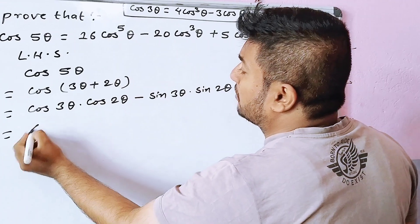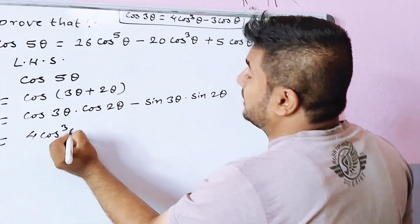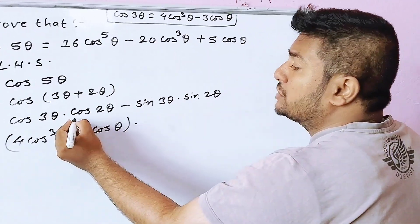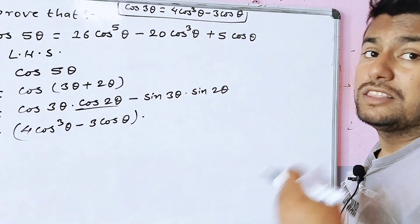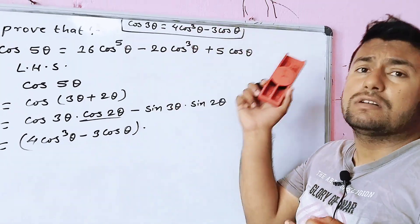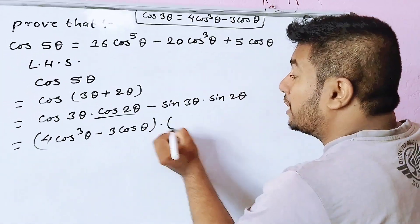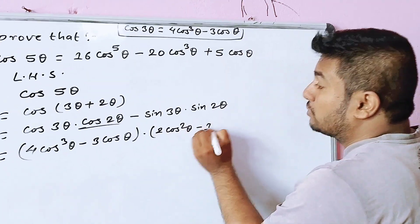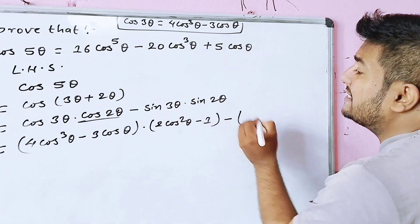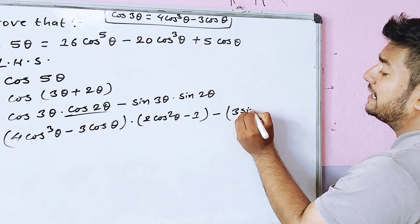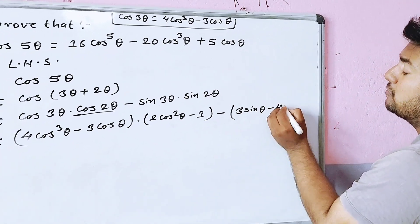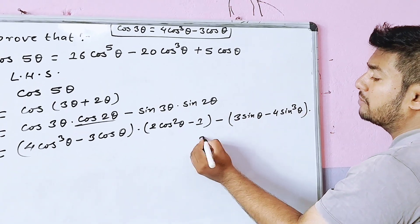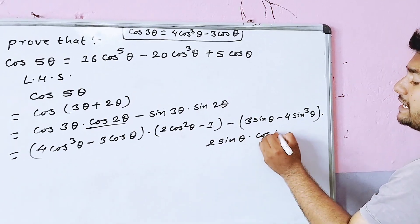The cos 3 theta formula is 4 cos cubed theta minus 3 cos theta. The cos 2 theta formula is 2 cos squared theta minus 1. The sin 3 theta formula is 3 sin theta minus 4 sin cubed theta. Now we substitute these into the expression.